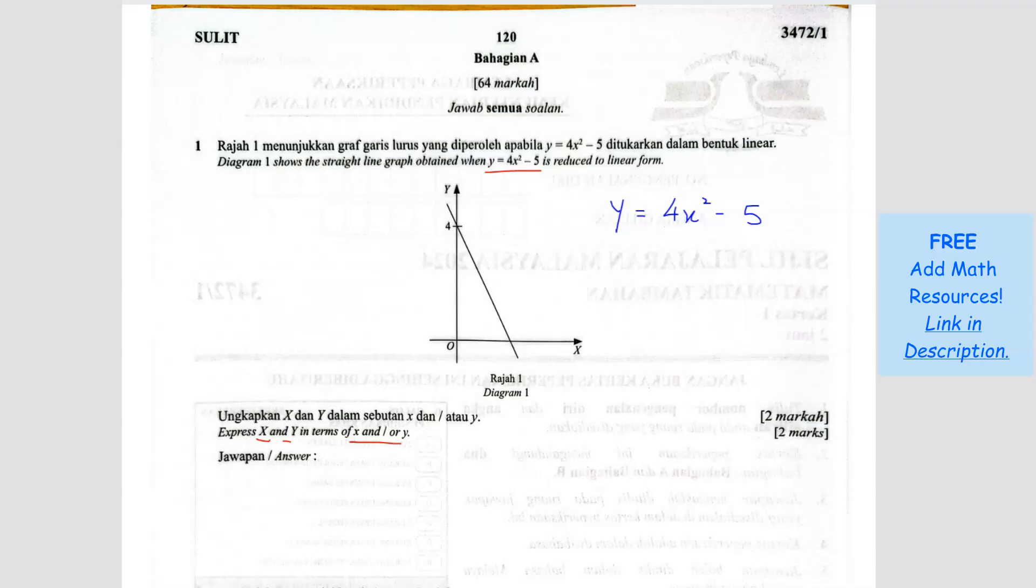So what we can do is we can take the whole equation, divide by x². When you divide by x², what you will have is y over x² equals, so 4x² divided by x², you get 4 minus 5 over x².